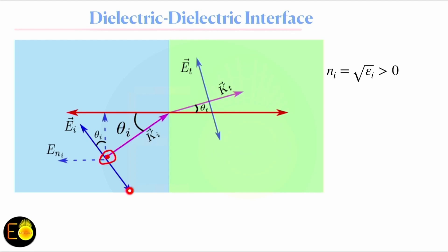Since the electric field is not parallel to the interface, it has two components, as the field exists only within the incident plane. The incident plane contains the electric field vector, the surface normal, and the propagation vector. If the incident plane contains the electric field vector, this is TM or transverse magnetic polarization — also called parallel or P polarization — because the magnetic field is perpendicular to the incident plane. If the electric field is perpendicular to the incident plane, that is TE or S polarization. Here we are concentrating on TM or P polarization.